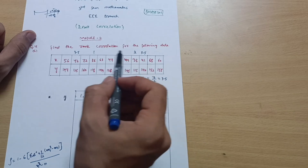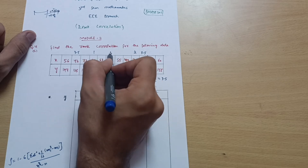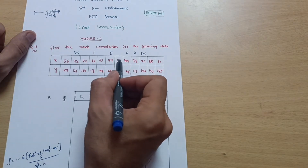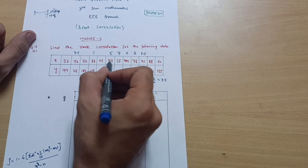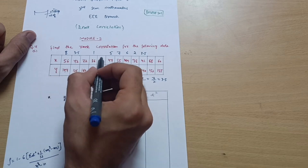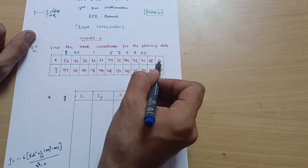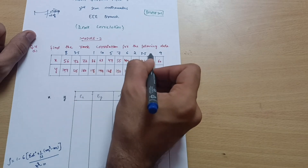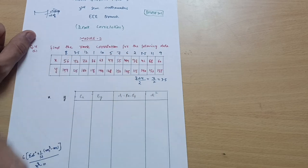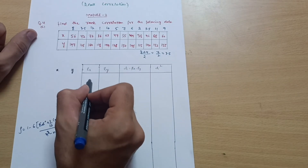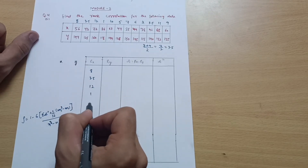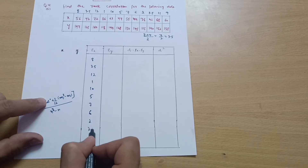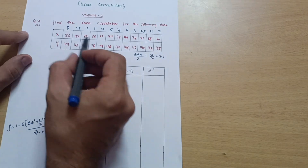The next rank available is 5, assigned to 47. Then 49 gets rank 6, 55 gets rank 7, 56 gets rank 8, 60 gets rank 9, 63 gets rank 10, 68 gets rank 11, and 72 gets rank 12. Now write down these ranks for the first row: 8, 3.5, 12, 1, 10, 5, 7, 6, 2, 3.5, 11, 9.